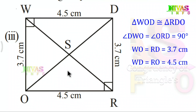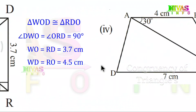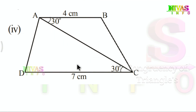We have the next fourth pair. Here we have 30 degrees and here we have 30 degrees — the angles are equal. But here is 7 centimeters and here is 4 centimeters — these two sides have different lengths. So these triangles are not congruent.